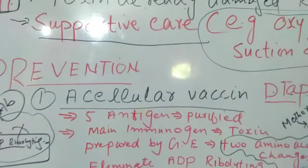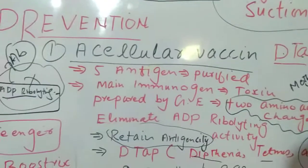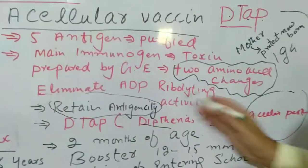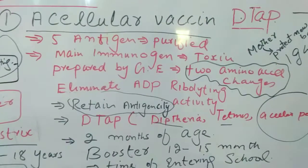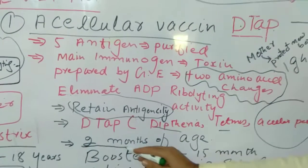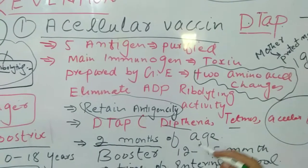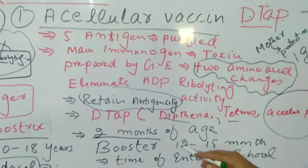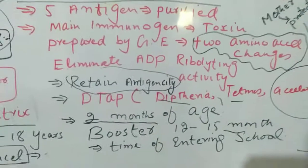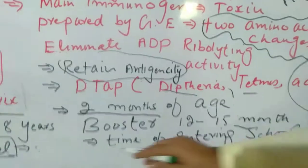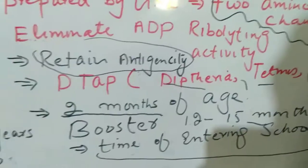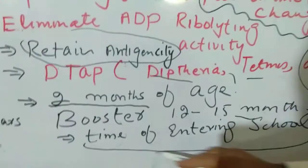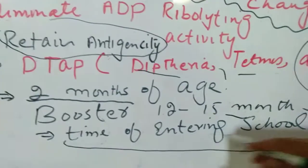This acellular vaccine is recommended for all ages. Doses can be given starting at two months of age, with a booster from 12 to 15 months, and another dose can be given to children at the time of entering school.